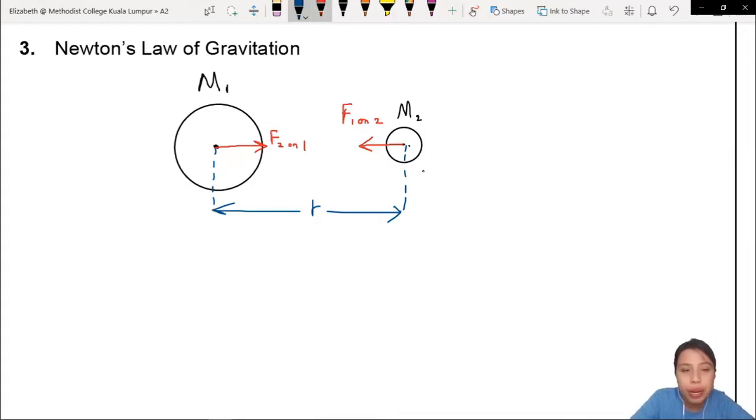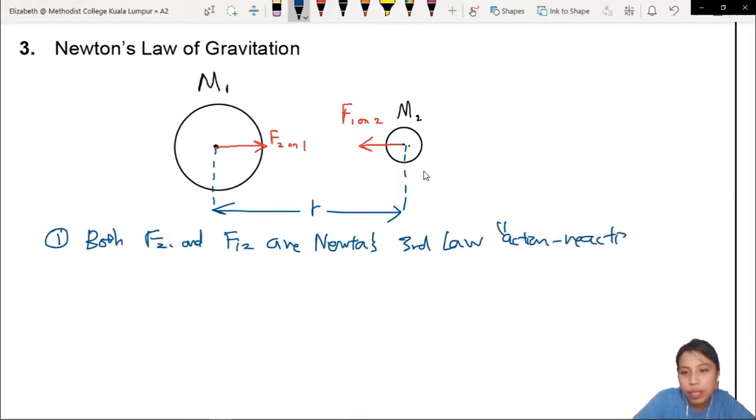The first fact. You see these two red arrows, right? This looks familiar. F2 on one, F1 on two. Have you seen this before? This is in AS. It's called Newton's third law pairs. So, you can say the first fact. Both F2 on one and F1 on two are Newton's third law pair, or what we call the action-reaction forces. Action-reaction pair. Same type. Equal magnitude opposite direction. Acting on different bodies. So, these two are the red ones. That's the first fact.